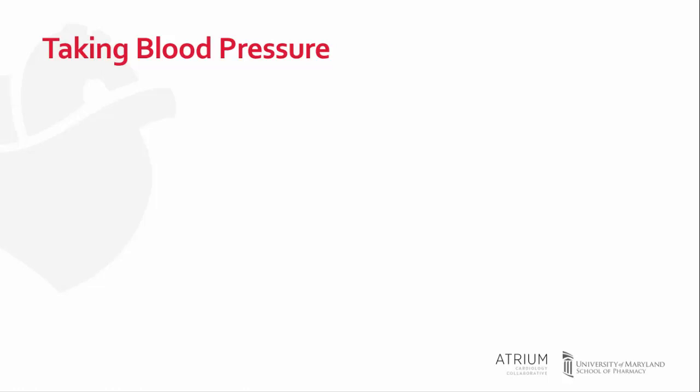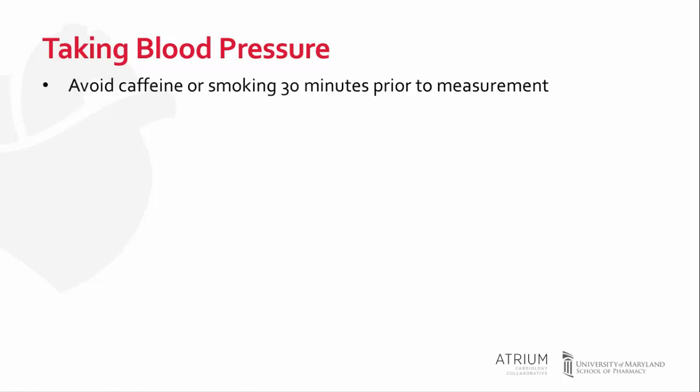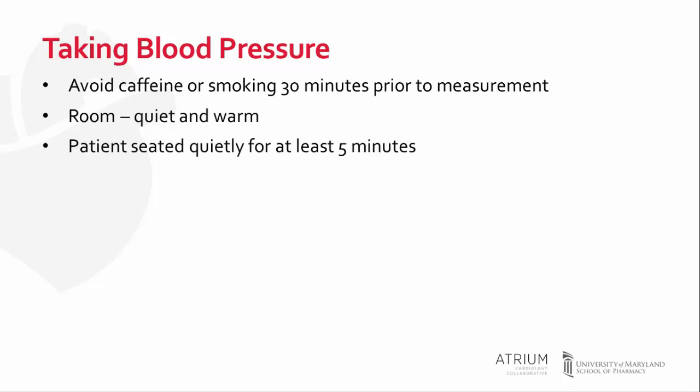Now that we have discussed the definition of blood pressure, let's talk about how to take a blood pressure measurement appropriately. First, it is important to instruct patients to avoid caffeine or smoking 30 minutes prior to your measurement, otherwise you could have a falsely elevated blood pressure. Also, make sure to have a quiet and warm room. Tell your patient to be seated quietly for at least five minutes, because if they are having anxiety or other issues, this could lead to an increase in their blood pressure reading, which may be falsely measured.